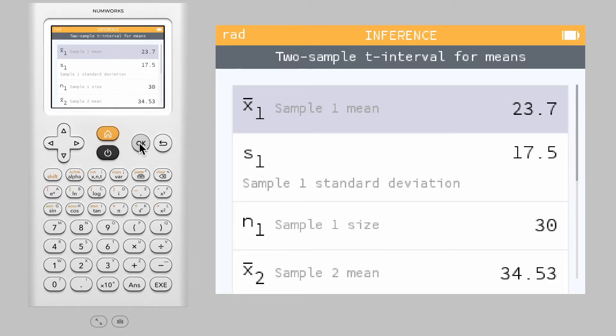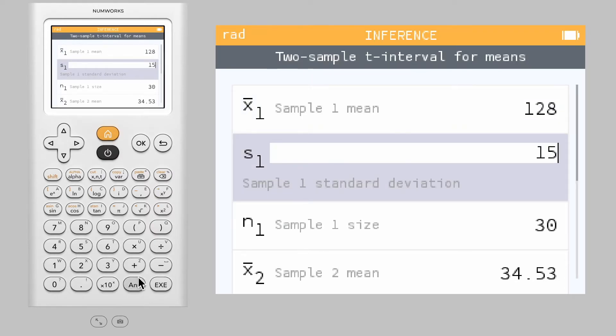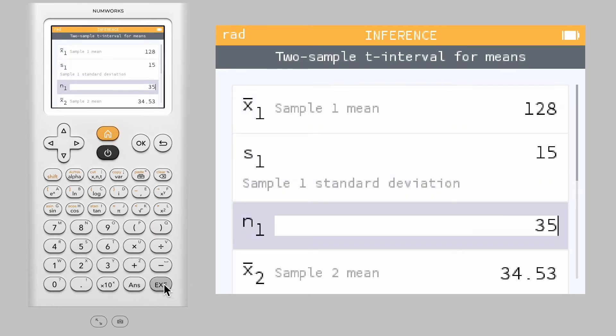For this example, use a sample mean of 128, standard deviation of 15, and sample size of 35 for the first sample.